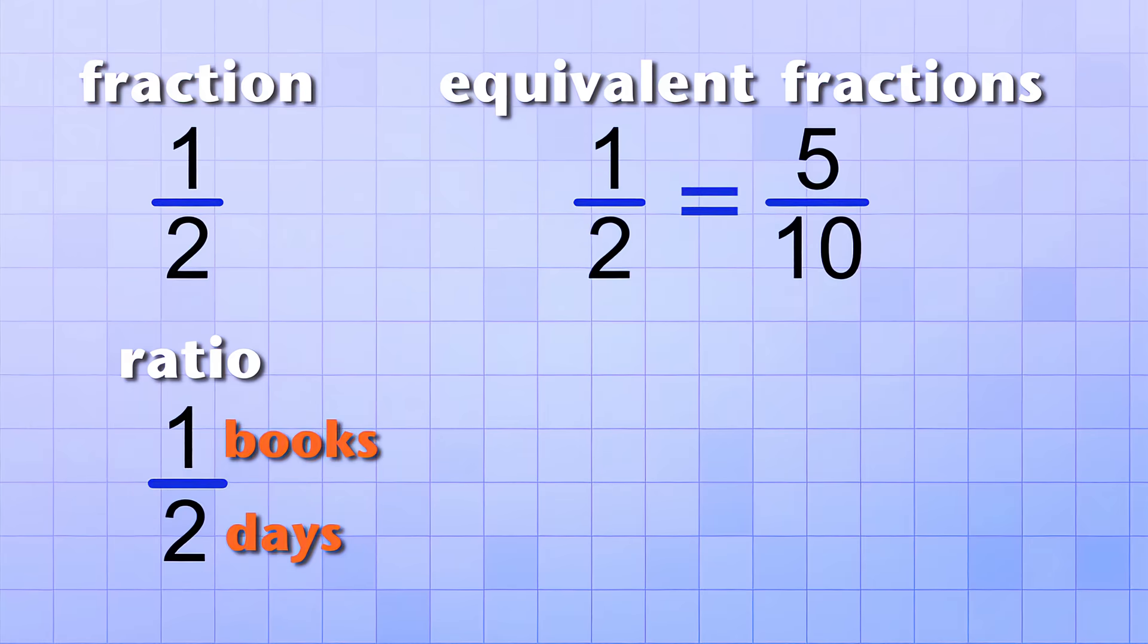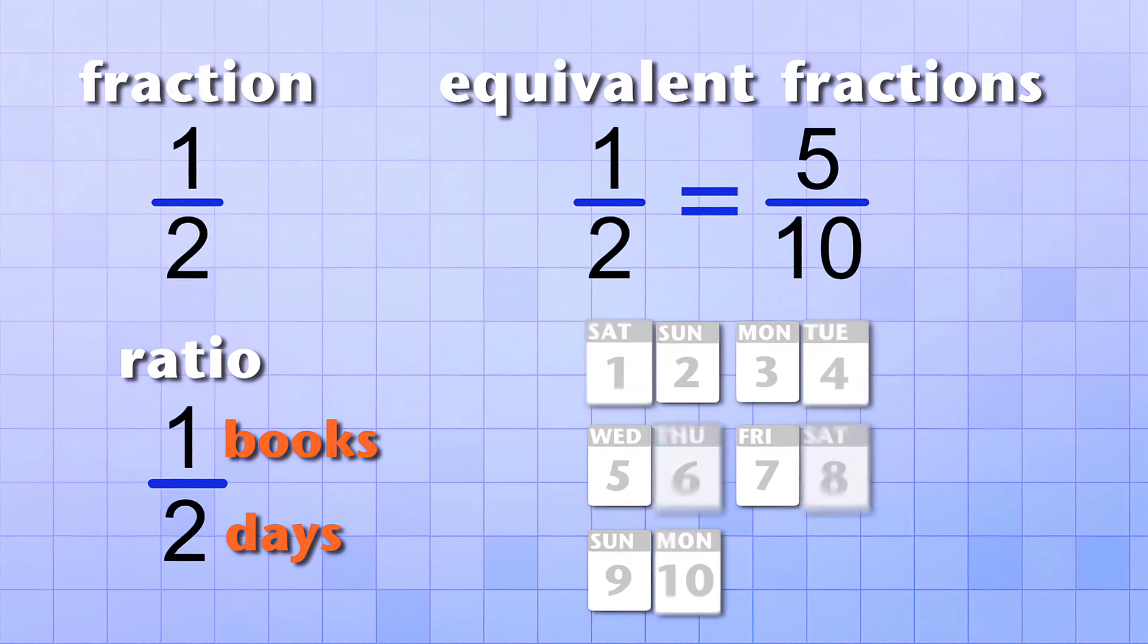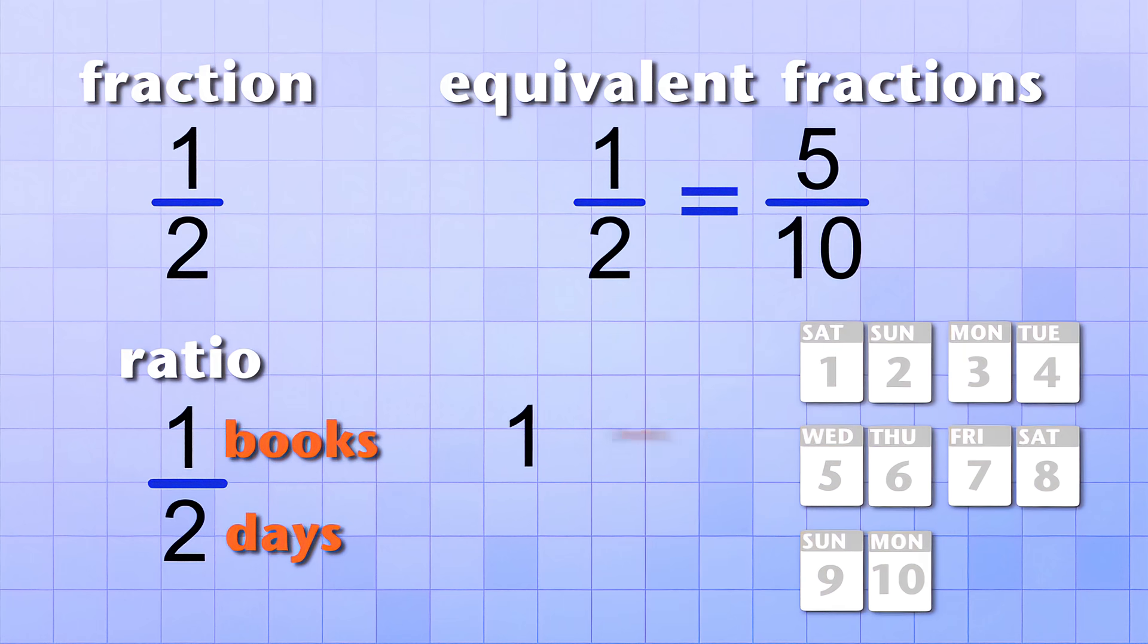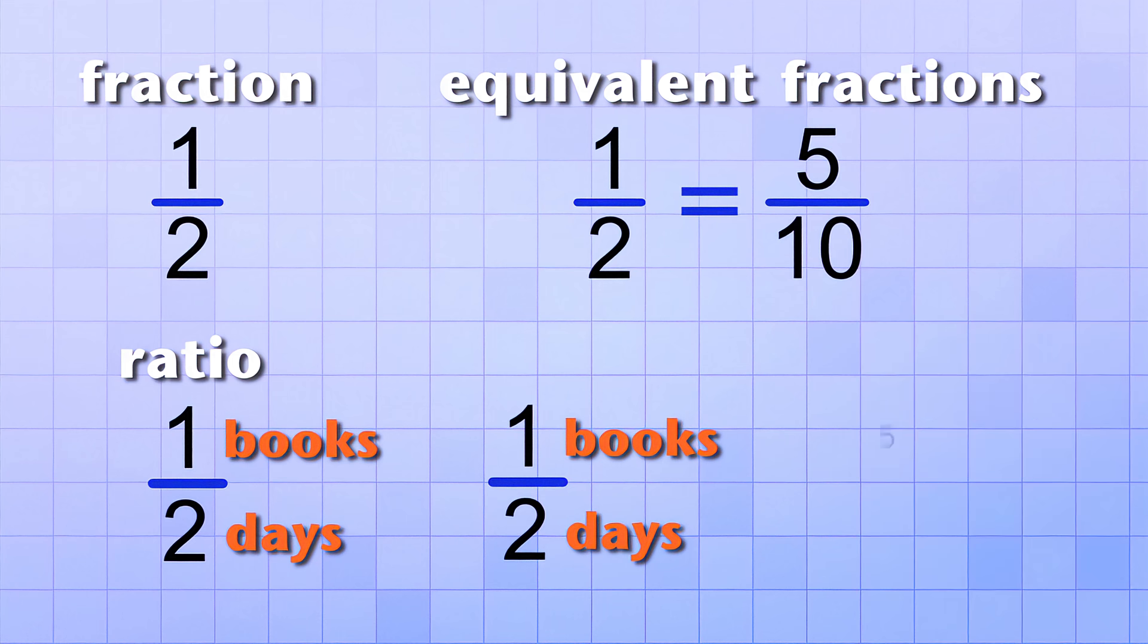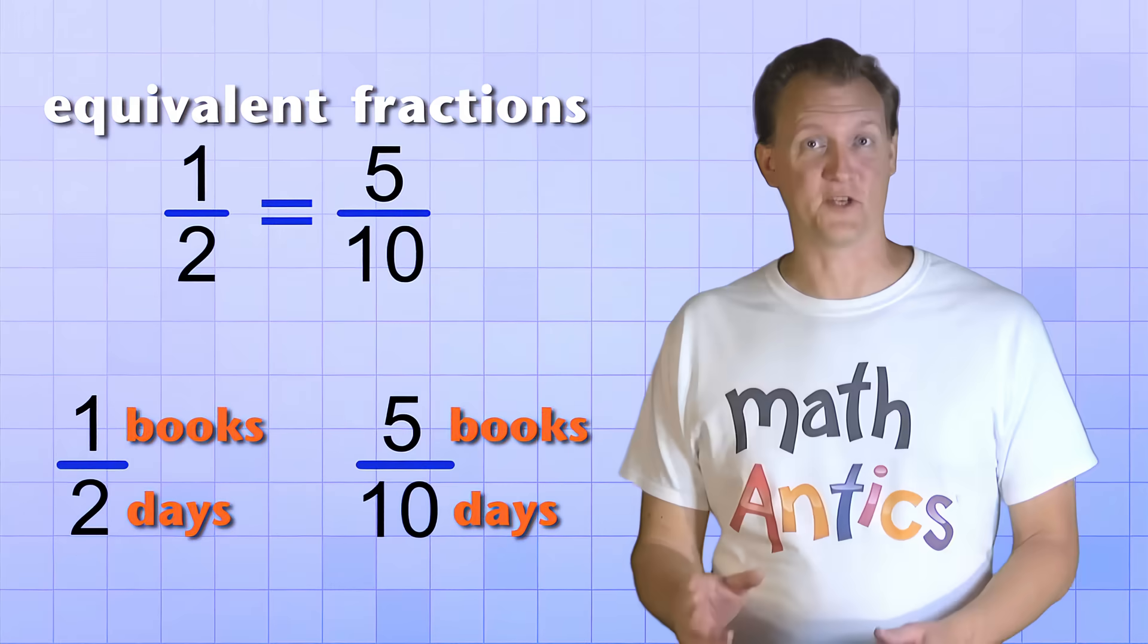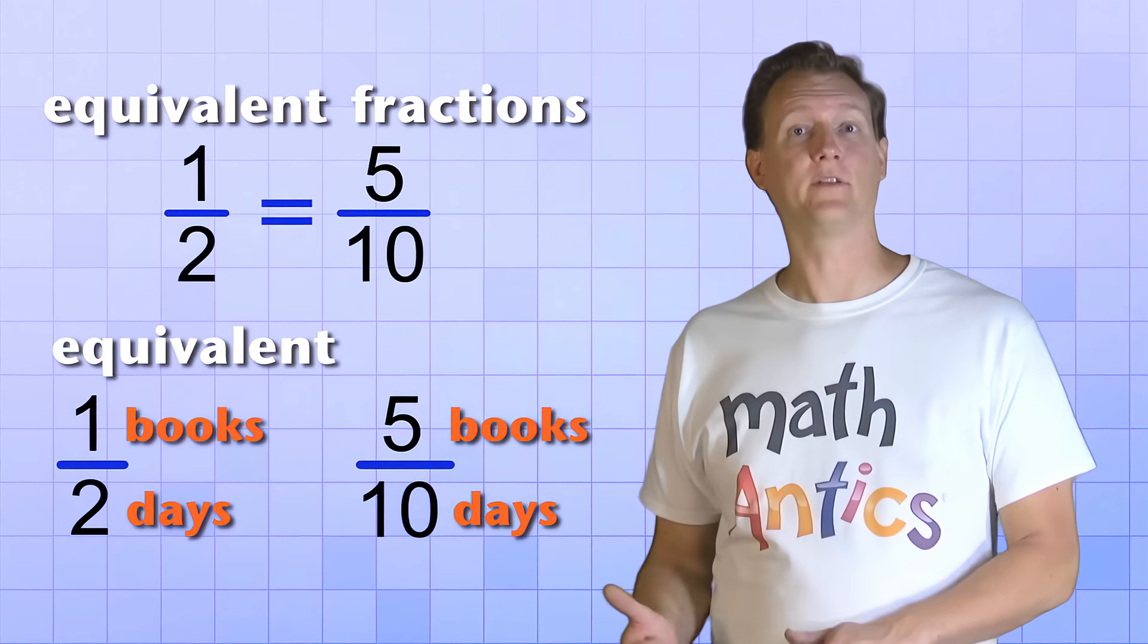But what if our student reads books at that same rate for 10 days? How many books would they read? Well, if they finish one book every two days, then in 10 days they'll have read 5 books. So that ratio would be 5 books per 10 days. Do you see what we have here? These are equivalent ratios.